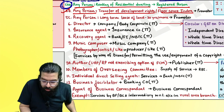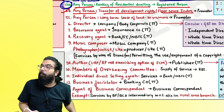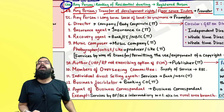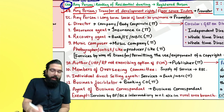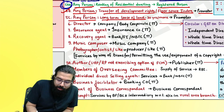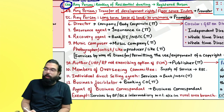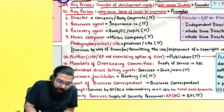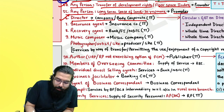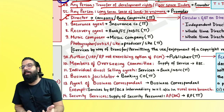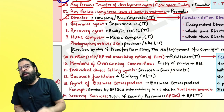If a person gives their development right or floor space index to a promoter, the promoter pays GST under RCM. If a person gives a long-term lease of land (30 years or more) to a promoter, the promoter pays GST under RCM. If a director gives services to a company or body corporate in the taxable territory, the company pays GST under RCM.